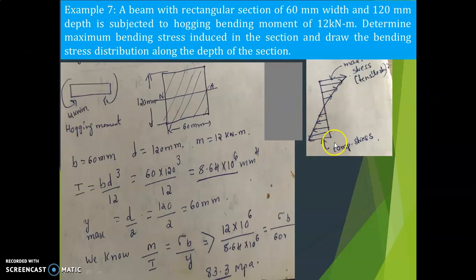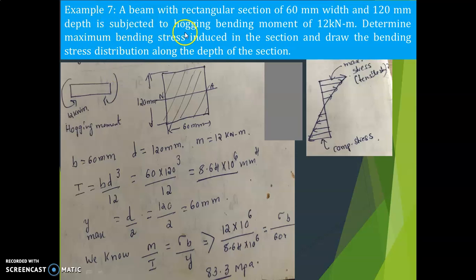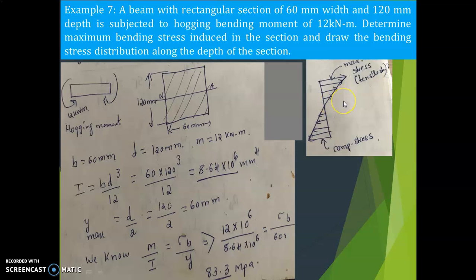I have taken this example because in the last example for the T-section I showed the bending stress distribution diagram, but that was for a positive bending moment — a simply supported beam — where compressive stress was developed on top and tensile stress on the bottom. Now here in this problem a hogging bending moment is given, which means it is a negative bending moment. So compressive stress will be induced at the bottom fiber and tensile stress will be induced on the top layer.